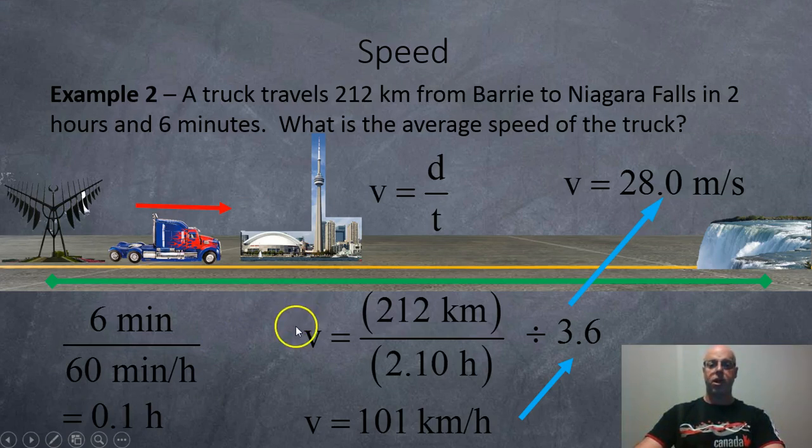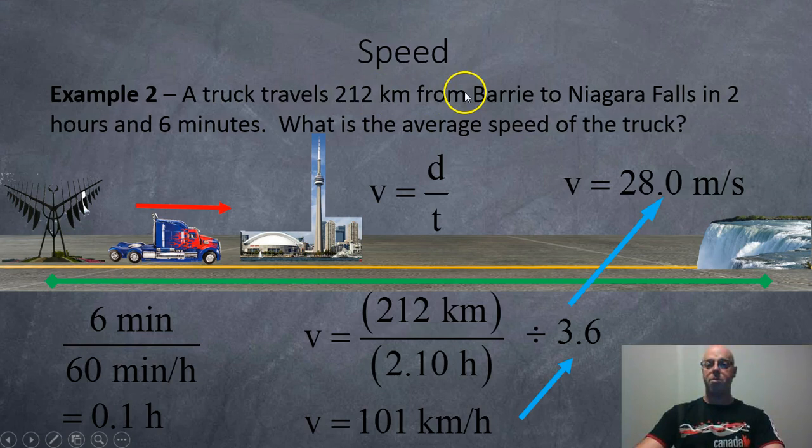Okay. Here's another example here. We got a truck traveling 212 kilometers from Barrie to Niagara Falls in 2 hours and 6 minutes. What is the average speed of the truck? Okay. So, first of all, 6 minutes is 0.1 hours. So, that's 2.1 hours altogether. So, we're going to get 212 kilometers divided by 2.1 hours. That's 101 kilometers per hour. So, now if you want to go to scientific units, we're going to divide by 3.6. And that works out to 28.0 meters per second.